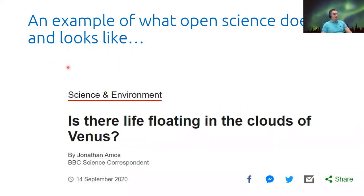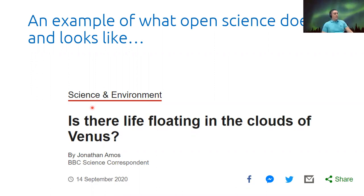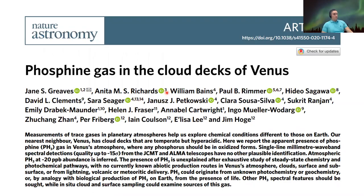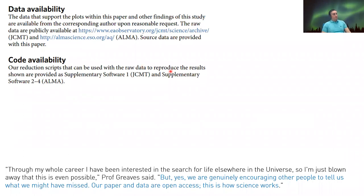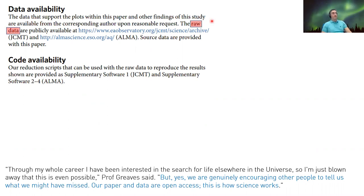An example of open science is an article that came out in BBC News about life floating in the clouds of Venus. Looking at the actual paper, what's particularly interesting are the data availability sections — there is a publicly available repository where you can find the raw, unpreprocessed data.